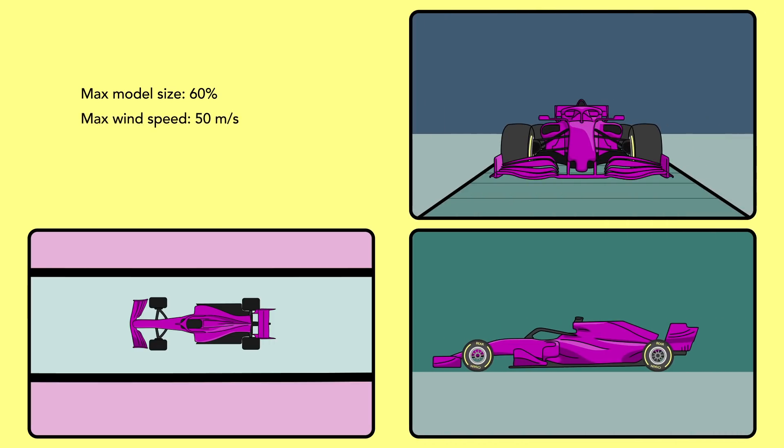The modelled car may only be a maximum of 60% scale and the airflow must not exceed 50 metres per second, which is about 180 kilometres per hour or 112 miles an hour.